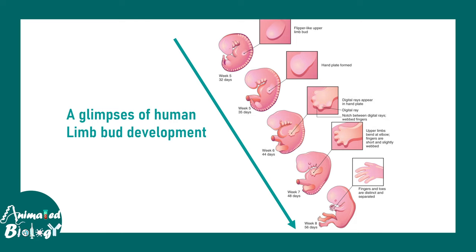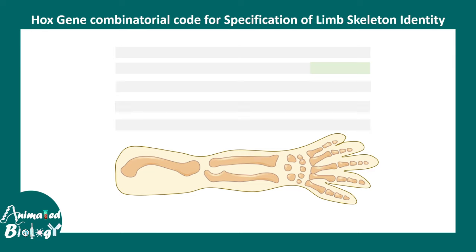In humans, limb development starts at week five and continues until around week eight — so it is a long process in both space and time.